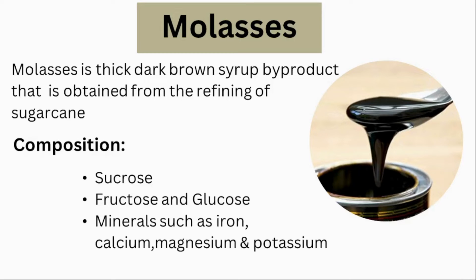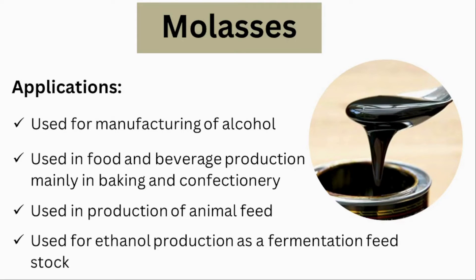Molasses is a thick, dark brown syrup by-product obtained from the refining of sugar cane. The composition of molasses includes sucrose, fructose, and glucose, as well as minerals such as iron, calcium, magnesium, and potassium.